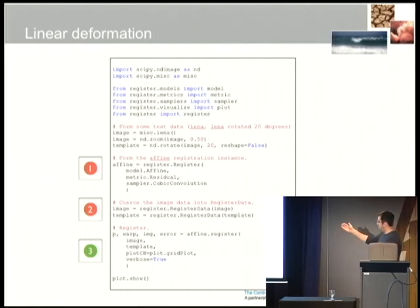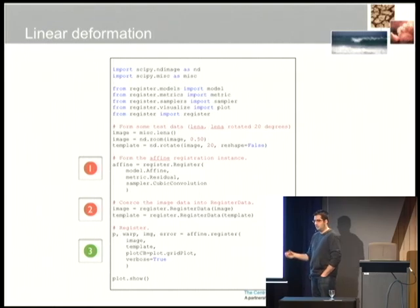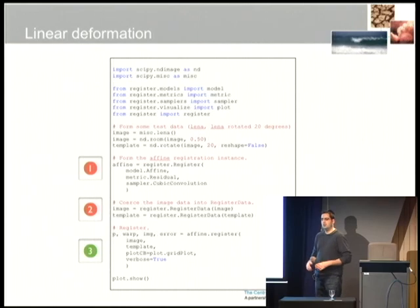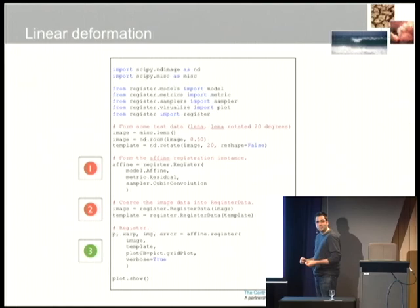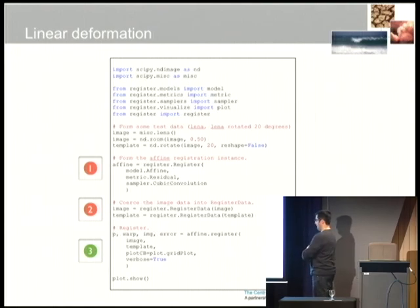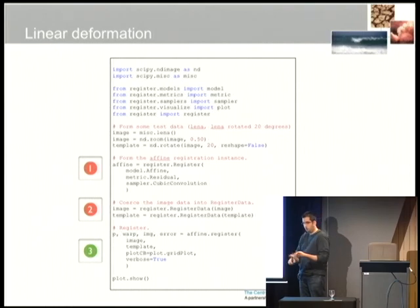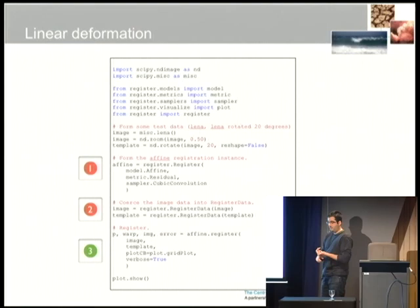I wanted to show how simple it would be to glue my package together and implement some image registration. The key idea is you import the Python Register package, import a metric, import a sampler, import a deformation model, and then you just glue them together. We've got a top-level register script which serves as the glue for a registrator.